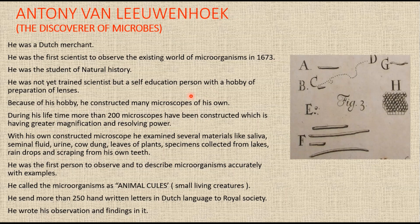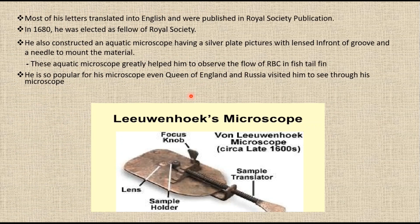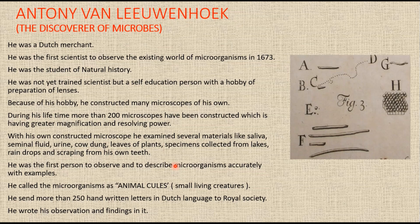He fixed his lenses by placing them between two silver or brass plates riveted together. The opening between the plates was less than one-sixth of an inch, and the specimen to be studied was mounted on a metal plate in front of a screw. During his lifetime, Leeuwenhoek constructed more than 200 such microscopes, and his microscopes could magnify objects about 200 to 300 times.